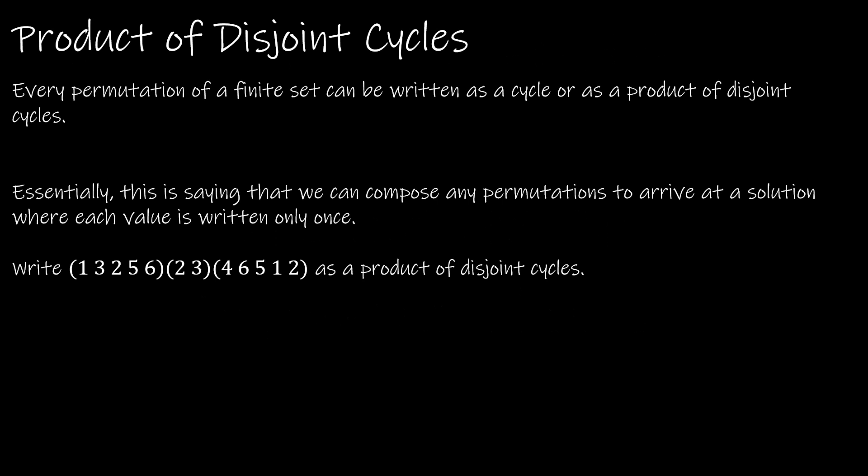Our first property says that every permutation of a finite set can be written as a cycle or as a product of disjoint cycles. Essentially, we can compose any permutation to arrive at a solution where each value is written only once. As you can see, I have three permutations here which I'm composing, and you can see that one occurs more than once, two occurs more than once, etc.